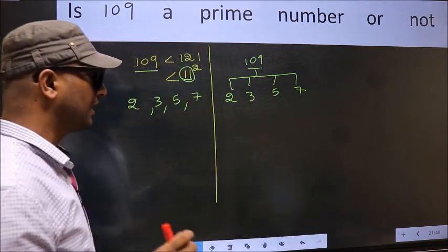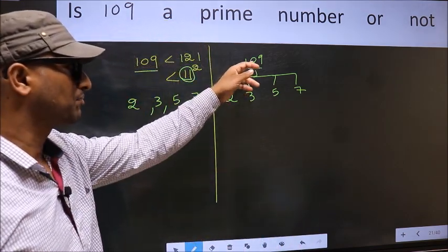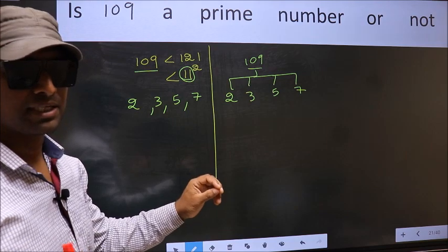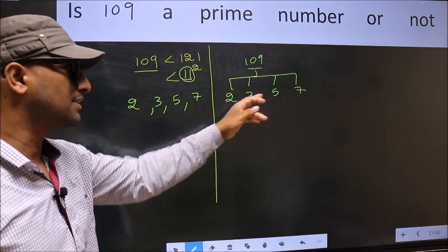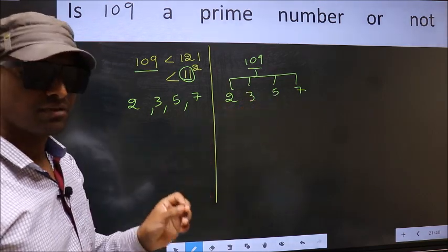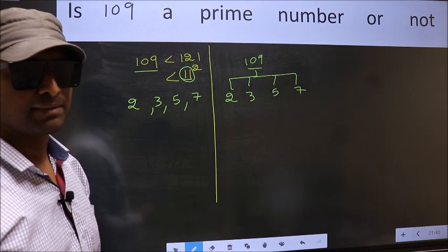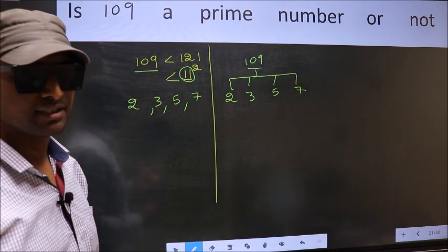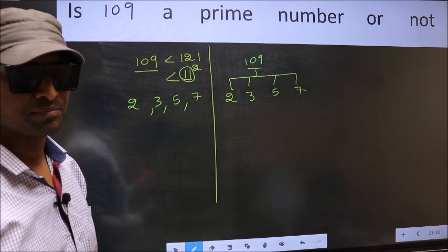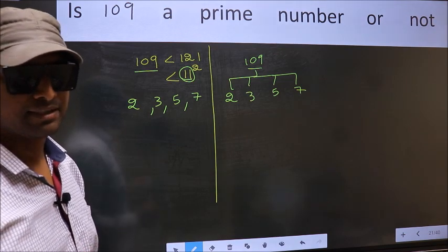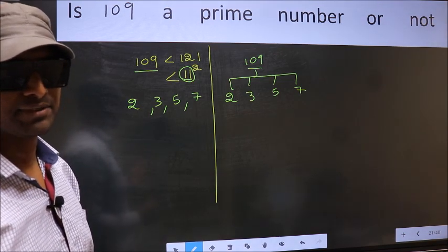If the given number is divisible by any one of these numbers, we say it is not a prime number. Otherwise, it is a prime number. Clear with the method, let us check with the divisibility.